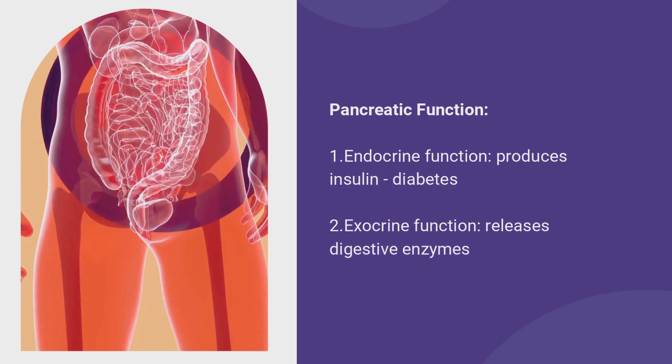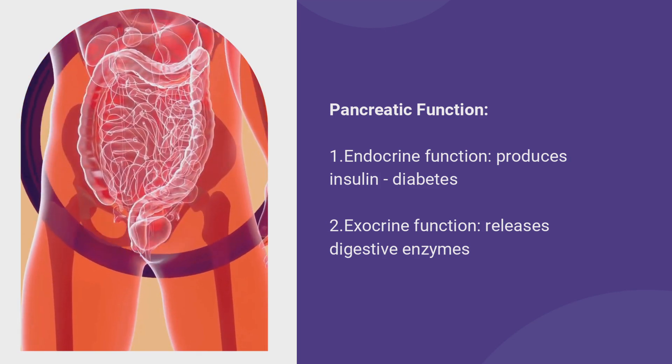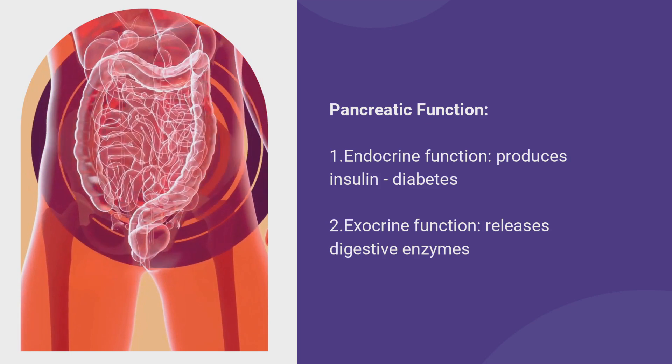The next test is called the fecal elastase test, used for the diagnosis of exocrine pancreatic insufficiency. The pancreas has two functions: the endocrine function produces insulin, used in managing diabetes; the exocrine function releases digestive enzymes that help digest food. When you have exocrine pancreatic insufficiency, you don't produce enough digestive enzymes, which can lead to malnutrition, weight loss, bloating, and steatorrhea — fat in your stools.